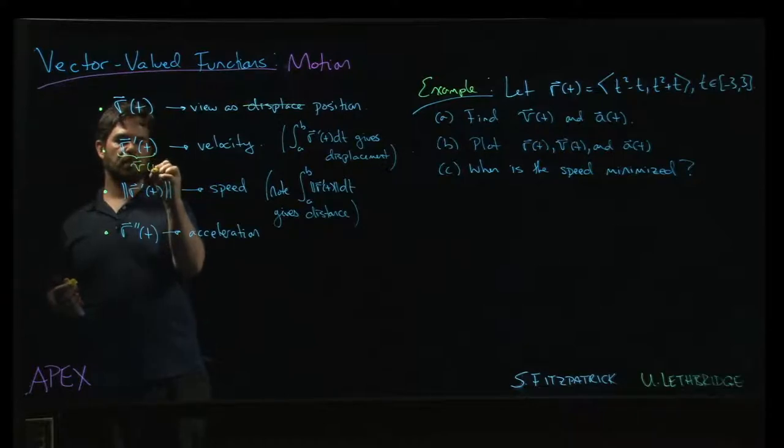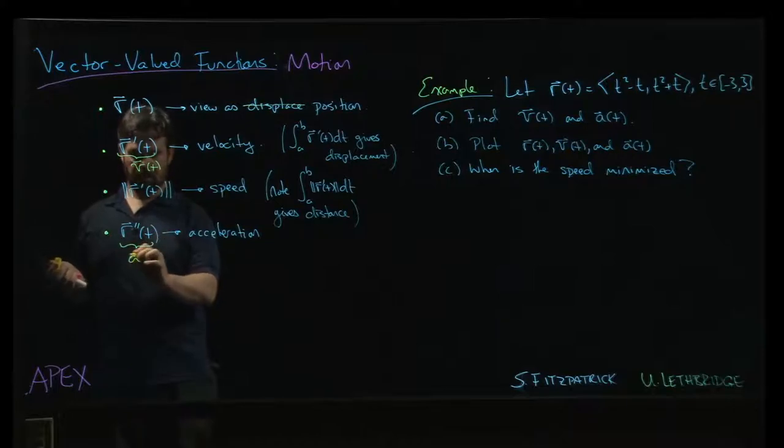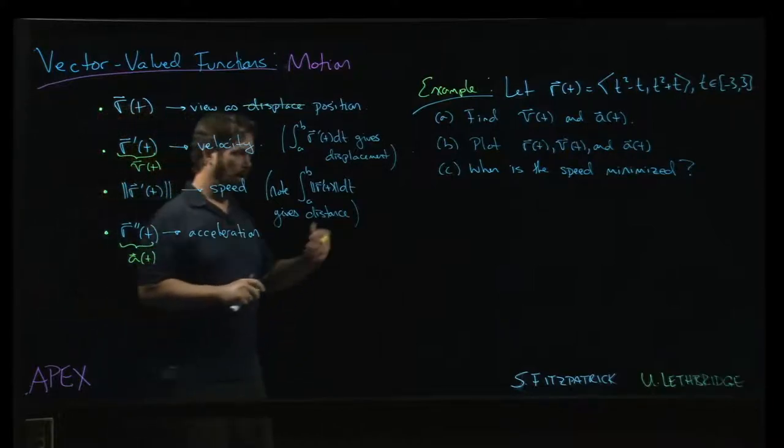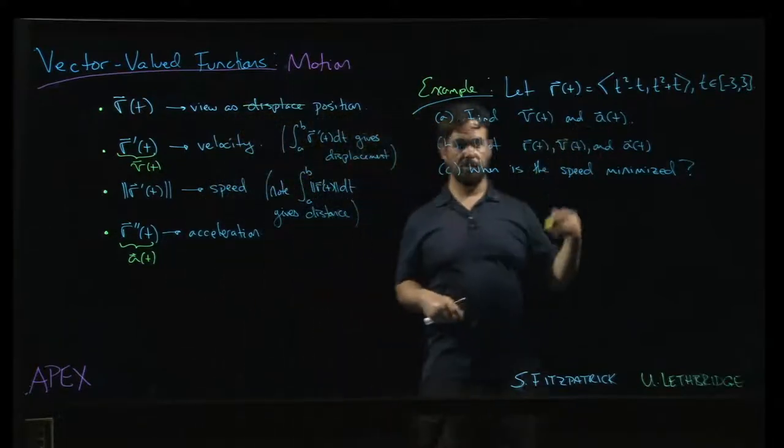Velocity will often denote by V of t. Makes sense, V for velocity and acceleration. A of t, A for acceleration. So you see that being used in the example here.